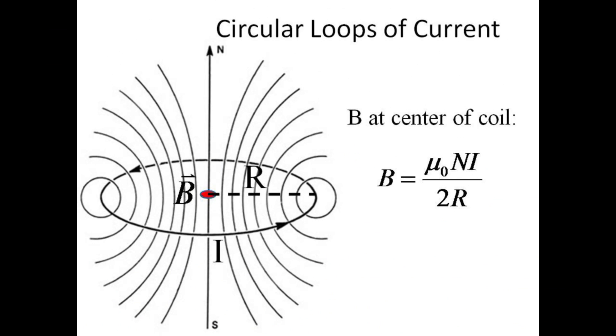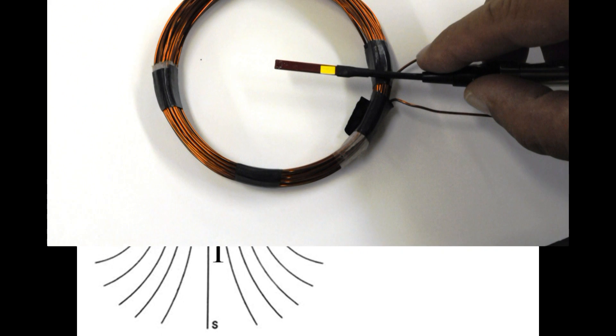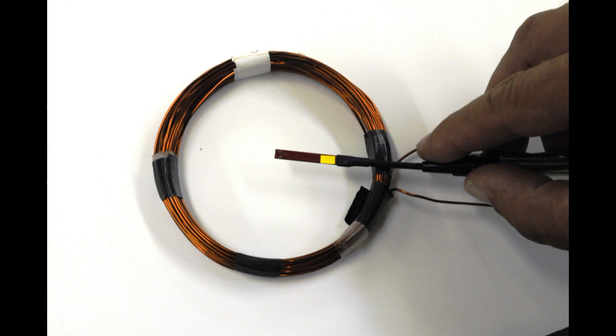A circular coil with N turns will produce a magnetic field at its center proportional to N and i, but inversely proportional to the radius of the coil. Again, just make sure that the flat surface of the probe is perpendicular to the magnetic field direction.